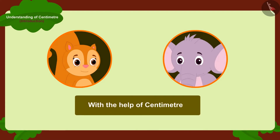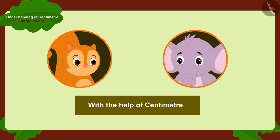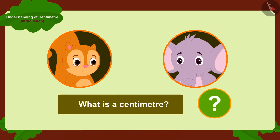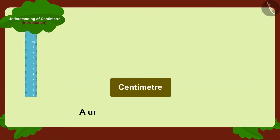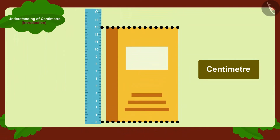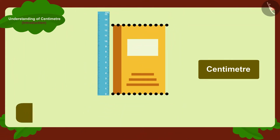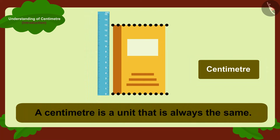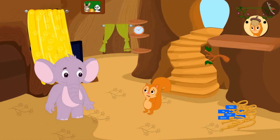Appu told Chanda that she can solve all these problems in a very easy way — with the help of centimeters. Chanda could not understand and immediately asked Appu, what is a centimeter? A centimeter is a unit of measuring length. We can measure the length of any object in centimeters, and centimeter is a unit that is always the same.